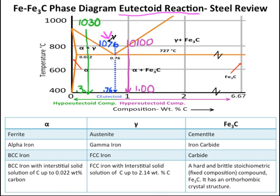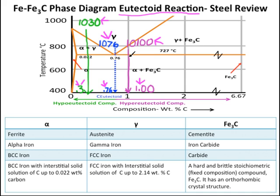Our first set of examples will be for 1076 steel, which has the eutectoid composition of 0.76 weight percent carbon. We will start in the two-phase alpha plus iron-iron carbide region. Our second set of examples will be for hypo-eutectoid 1030 steel, which has a composition of 0.30 weight percent carbon. We will start in the single-phase gamma region, and then cool down into the alpha plus iron carbide region. The final set of examples will be for hyper-eutectoid 10100 steel, which has a composition of 1.00 weight percent carbon. We will begin in the two-phase gamma plus iron carbide region, and then cool into the two-phase alpha plus iron carbide region.